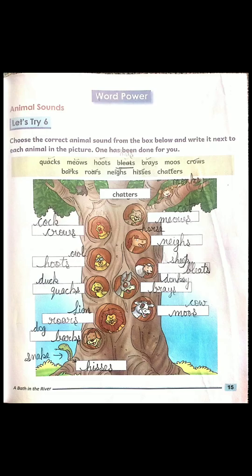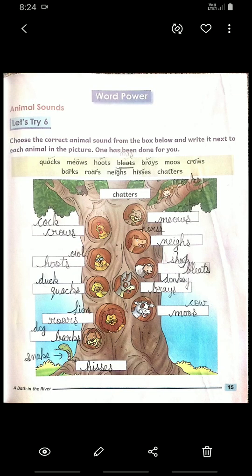Next is lion. Roars — R-O-A-R-S. After that dog. The sound of dog is barks — B-A-R-K-S. Last one is snake. Hisses — H-I-S-S-E-S.